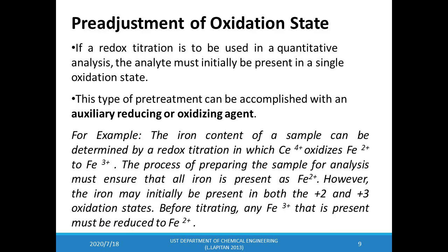Now let us look at how we can adjust the oxidation state of the analyte before a redox titration. If a redox titration is to be used in quantitative analysis, the analyte must initially be present in a single oxidation state. For example, iron is determined by a redox titration in which cerium-4 oxidizes iron-2 to iron-3. Depending on the sample, iron may initially be present in both the +2 or +3 oxidation states, so we must reduce any iron-3 to iron-2 before titrating.